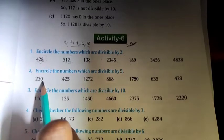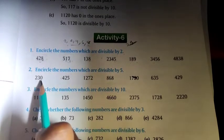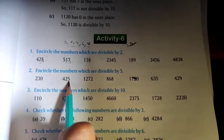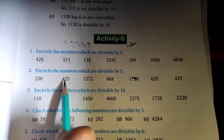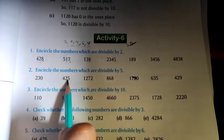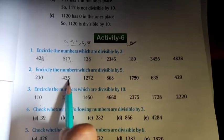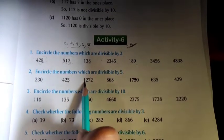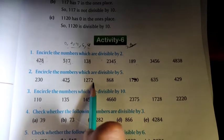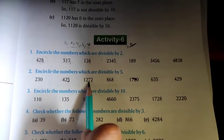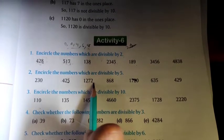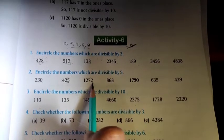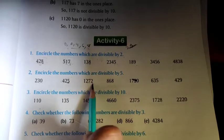230 is divisible by 5. The number 425 is also divisible by 5 because in the ones place the digit is 5. The number 1272 is not divisible by 5 because in the ones place the digit is neither 0 nor 5.